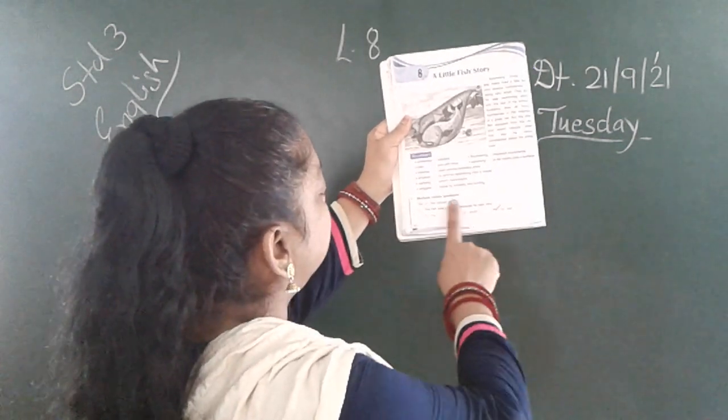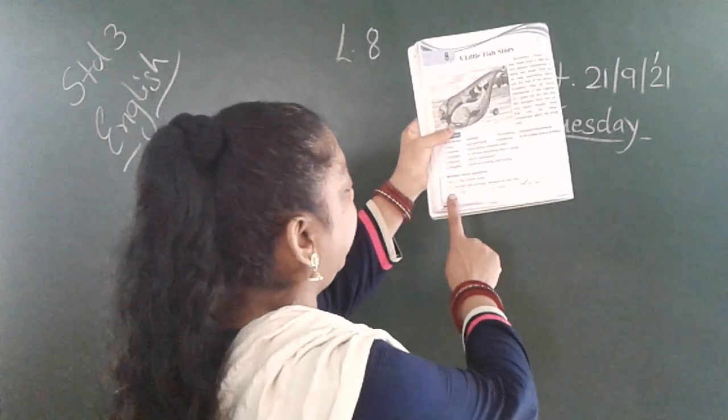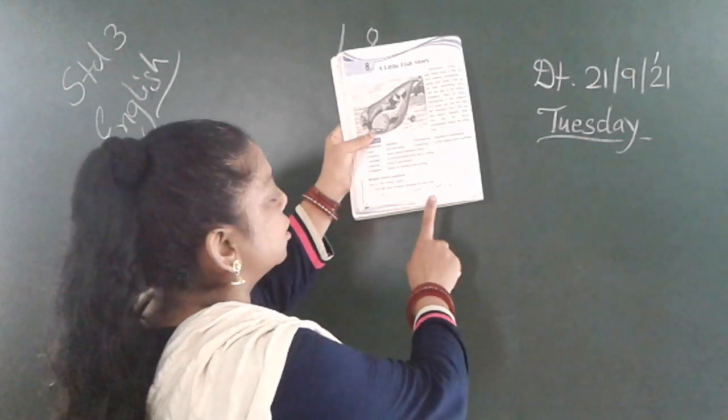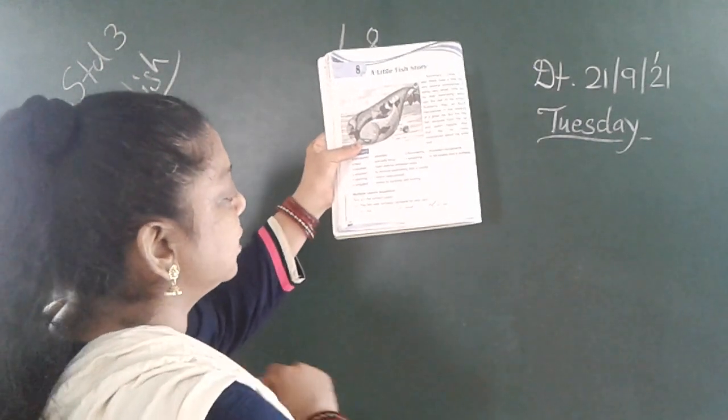Question number 1. Multiple choice question, choose the correct option. A. The fish was unhappy because he was big, small, or tall. So answer is small.